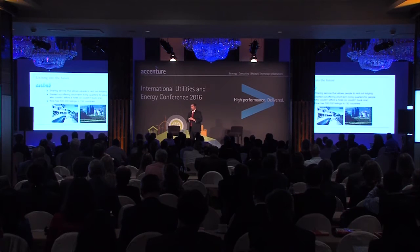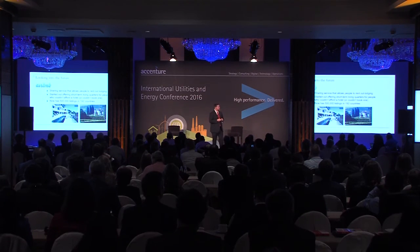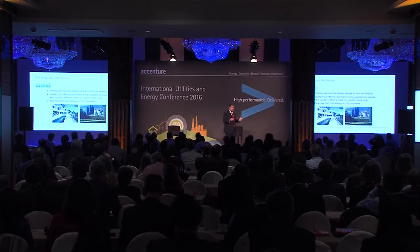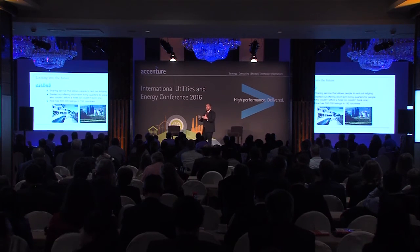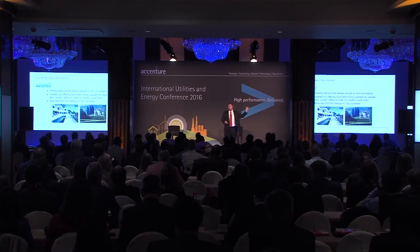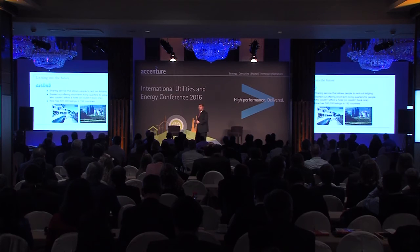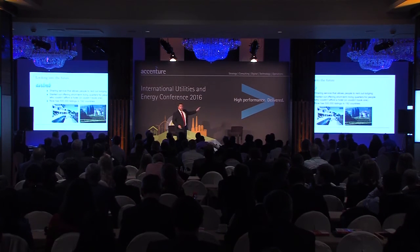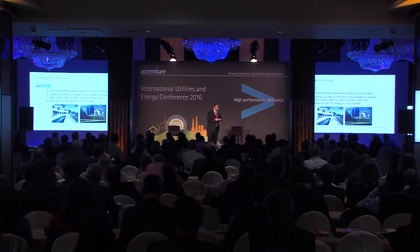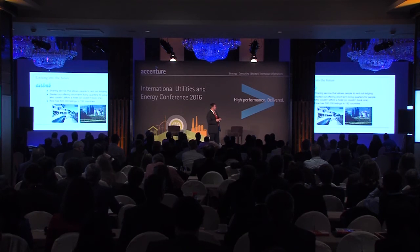Consider Airbnb — a sharing service that allows people to rent out lodging. It started off offering short-term living quarters for people who couldn't afford a hotel or couldn't book one in a crowded market. It was people subletting their apartment, their room, or even their couch — an inferior product to a hotel. But over time they improved their offering, added more features, functionality, and technology, and enhanced their business model. They now have a sophisticated rating service and more than 500,000 listings in 192 countries, including a $4,000-a-night beach house in Australia and a $7,000-a-night villa in Florence, Italy.